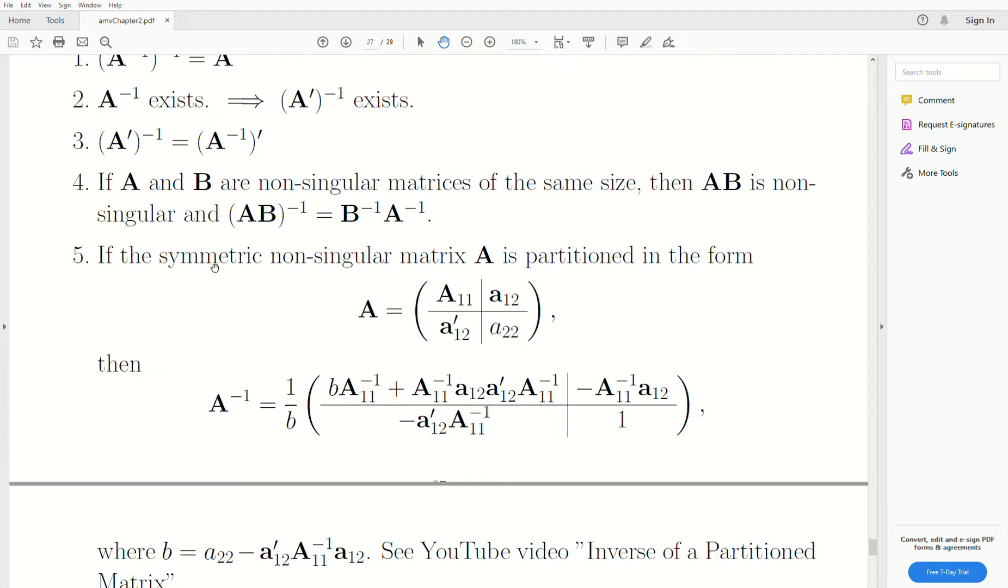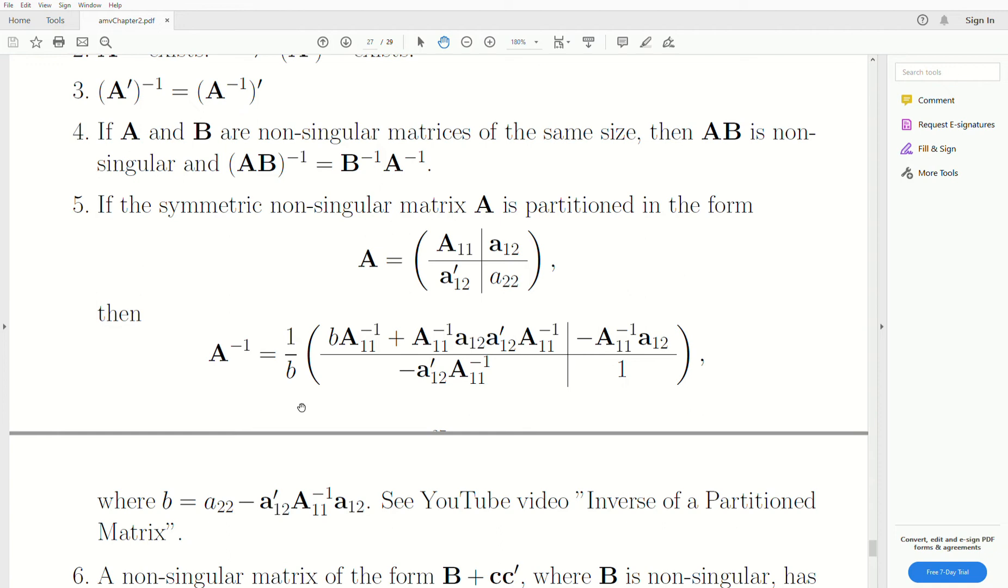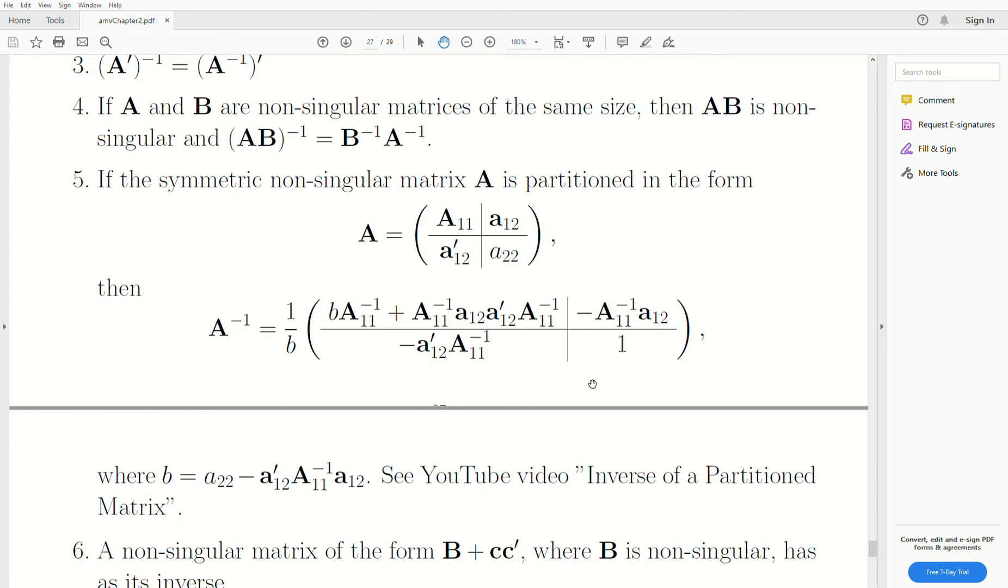So if we have a symmetric non-singular matrix A and we partition it, then this is the inverse of it. Now I'm going to point you, and this B, of course, is this matrix, or this calculation. If you want more now, I have a video called Inverse of a Partitioned Matrix in one of my playlists. I think the matrix playlist, if you want more detail on this.